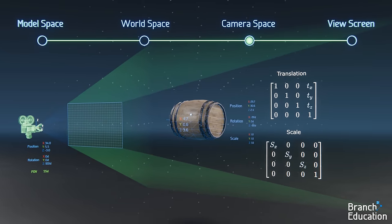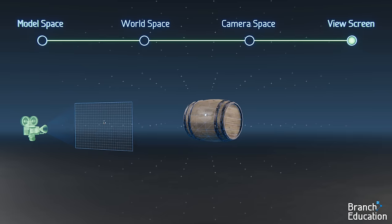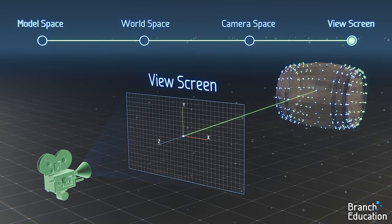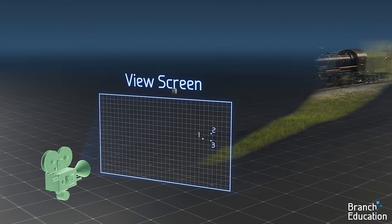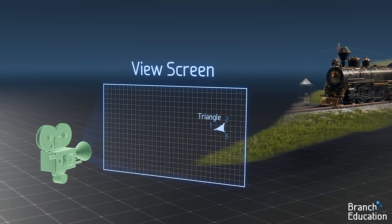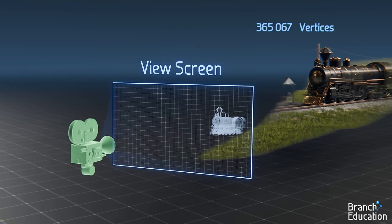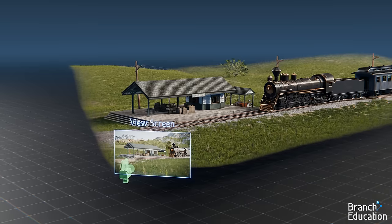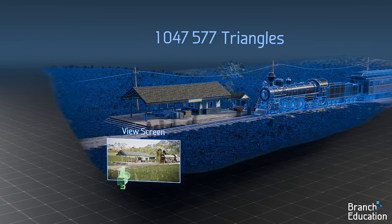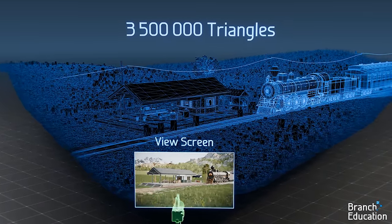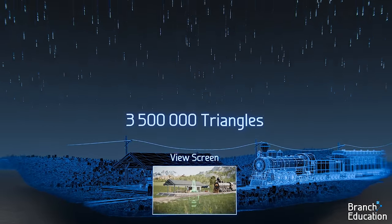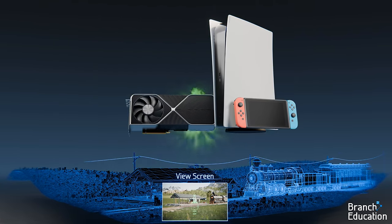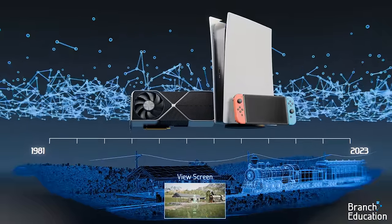We plug all these numbers into different transformation matrices and multiply them together, resulting in the x and y values of the vertex on the view screen, as well as a z value or depth, which we'll use later to determine object blocking. After three vertices of the train are transformed using similar matrix math, we get a single triangle moved onto the view screen. Then the rest of the 382,000 vertices of the train, and the 2.1 million vertices of all 600 objects in the camera's field of view, undergo a similar set of transformations, thereby moving all 3.5 million triangles onto a 2D view screen.